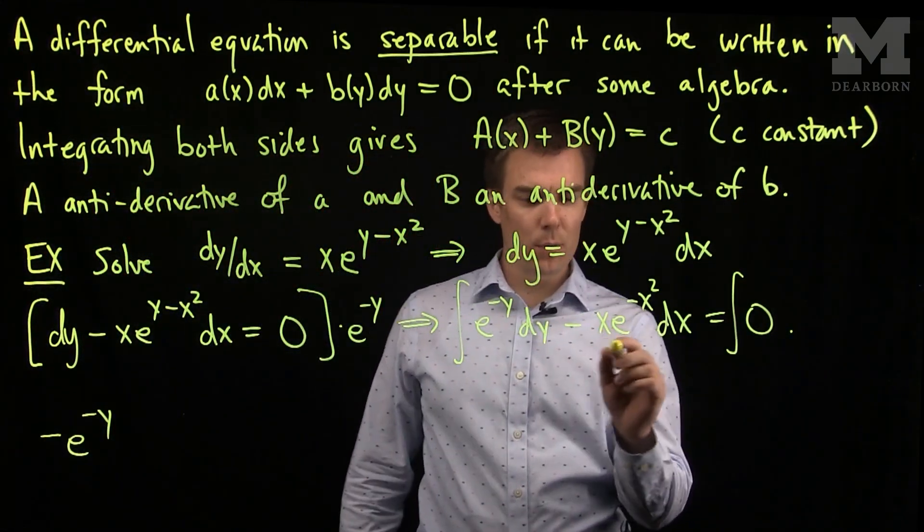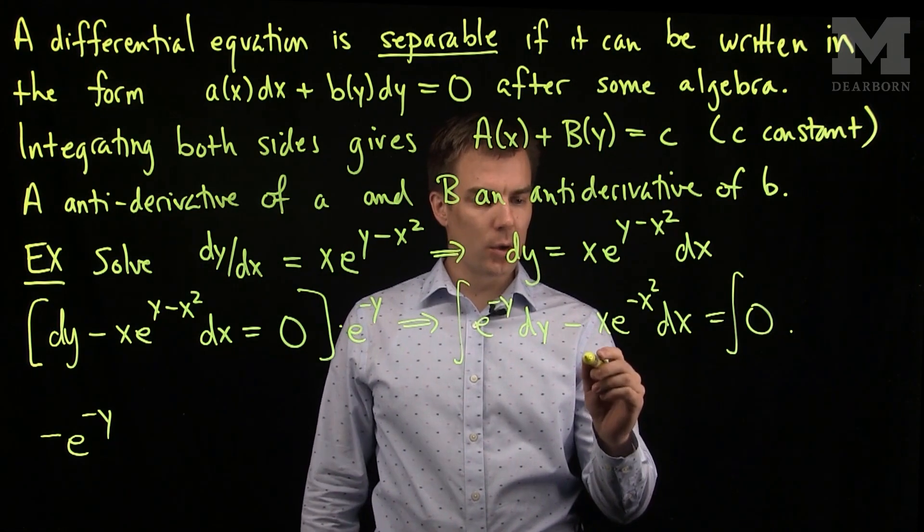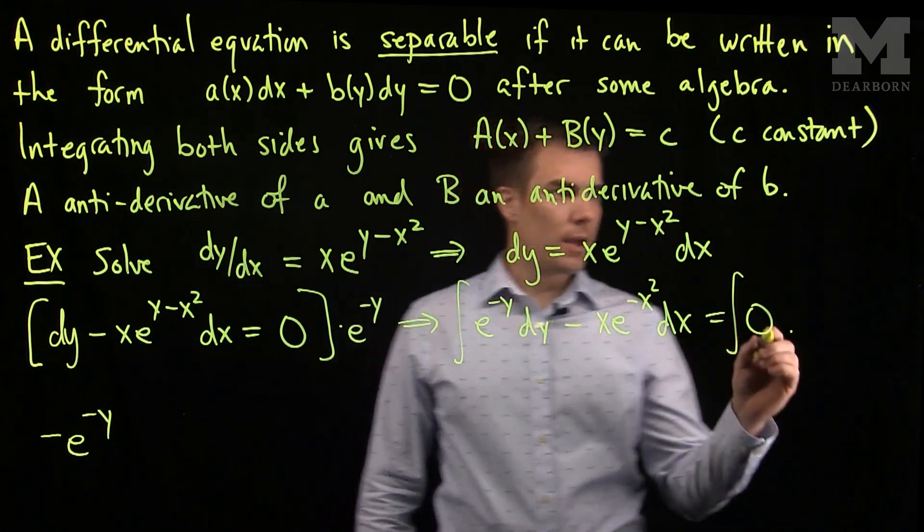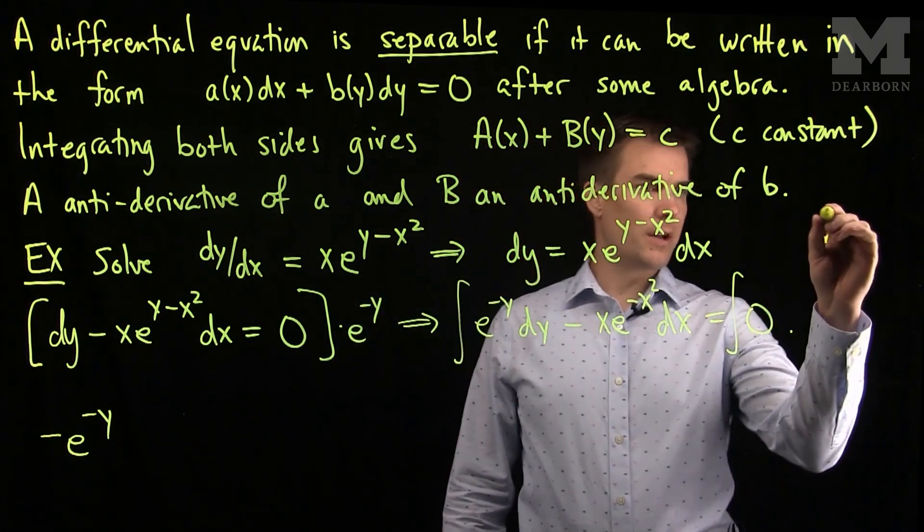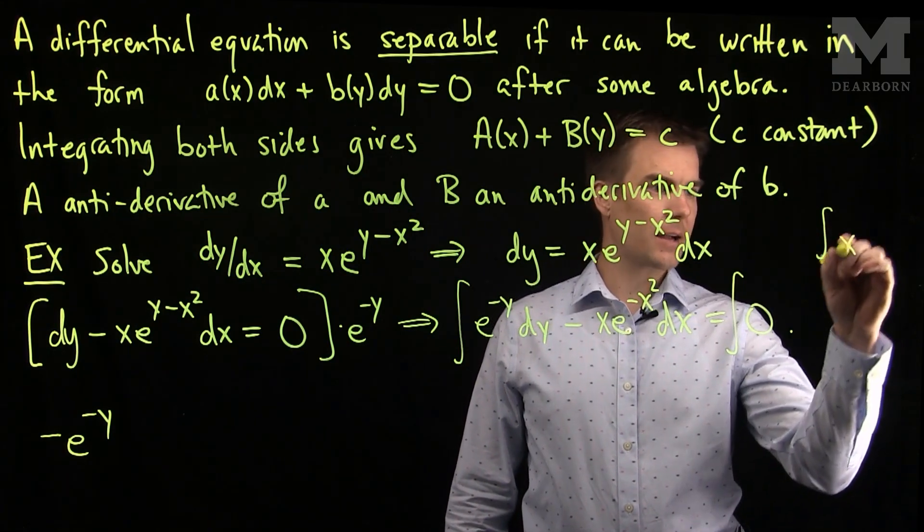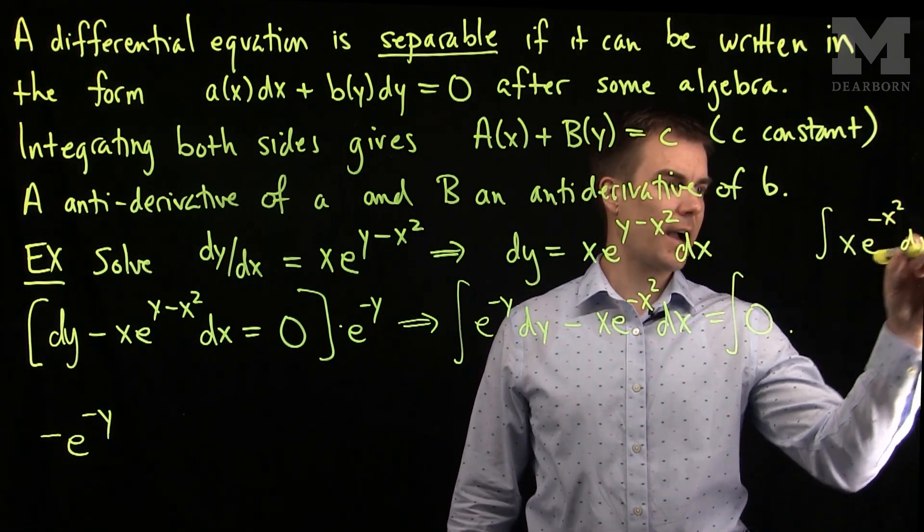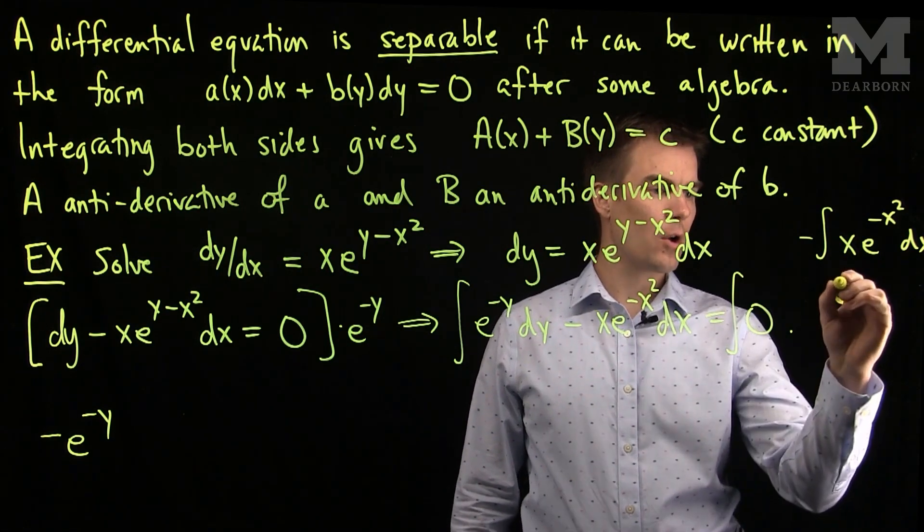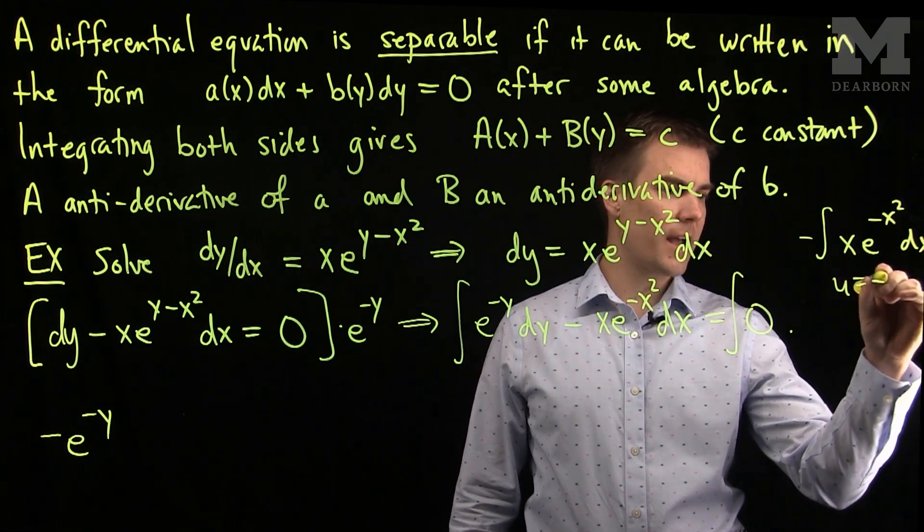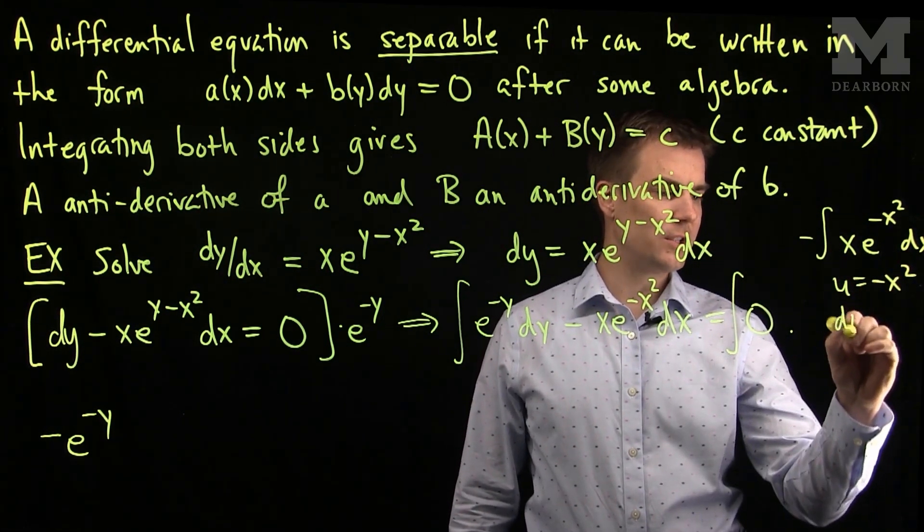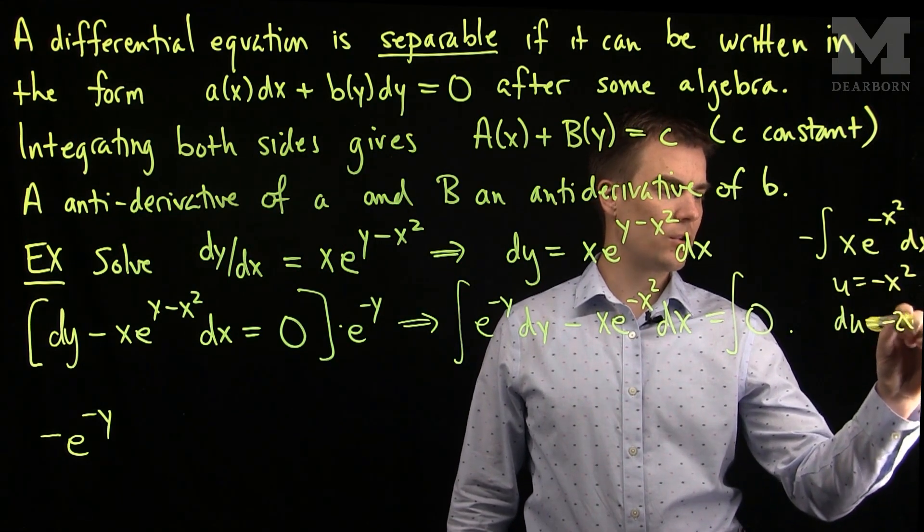This one is slightly more tricky to do. We'll need to make a u-substitution. If we make a u-substitution to do the integral of xe^(-x²)dx, with a negative sign out in front, we'll let u be -x². So, du will be -2x dx.